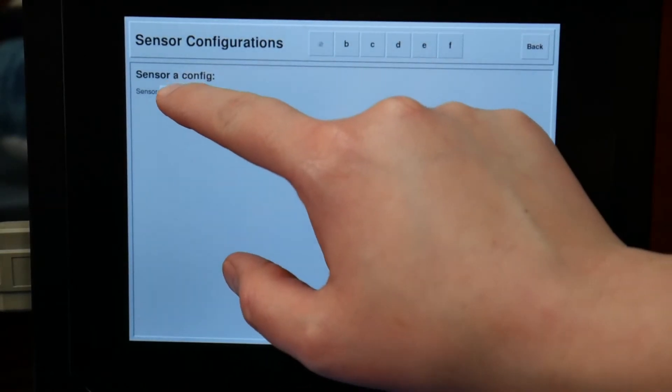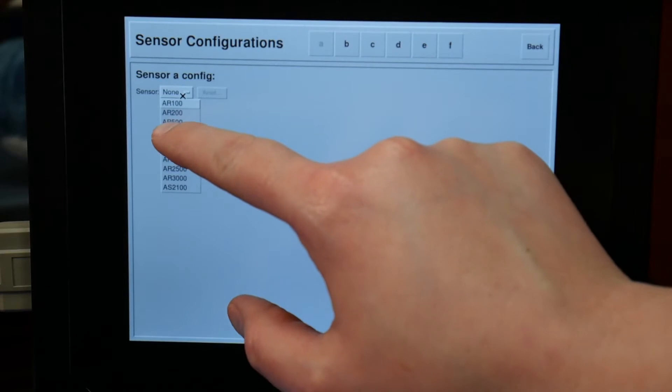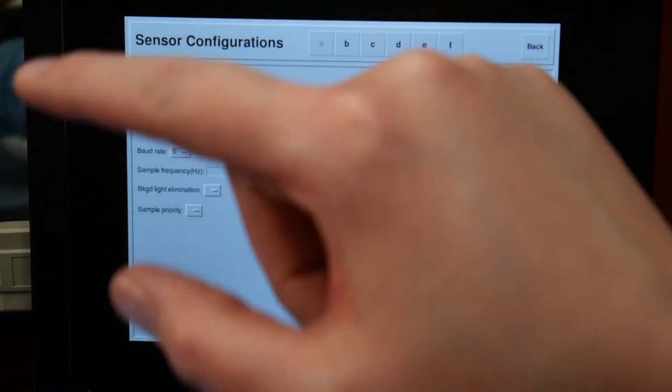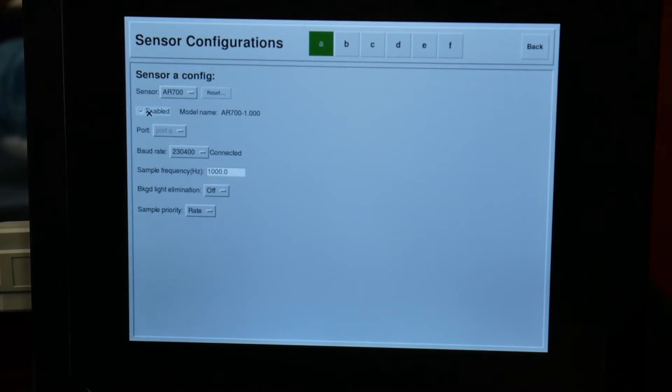Select the sensor type, tap enable, and now your sensor is connected.